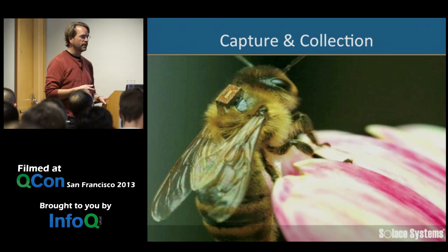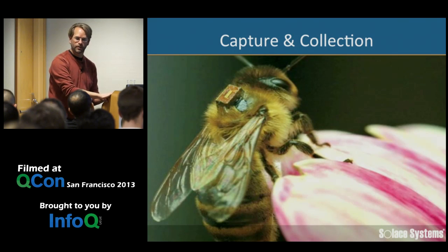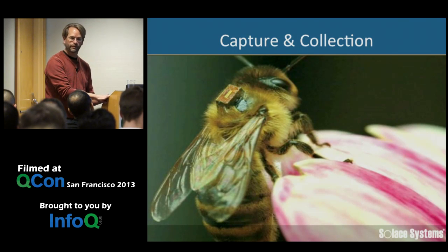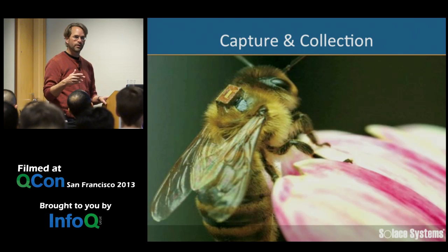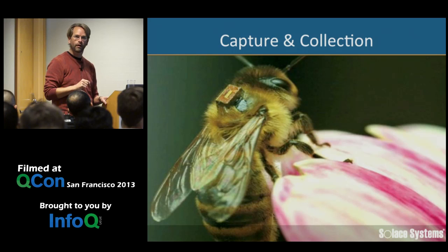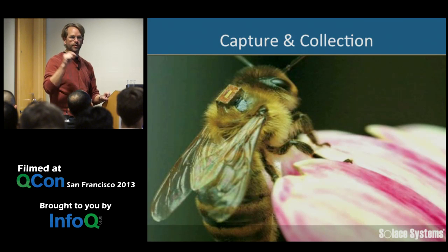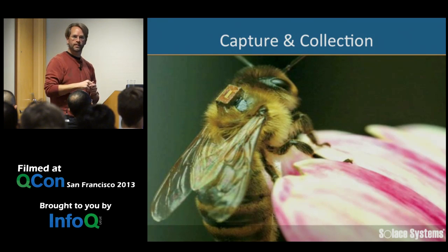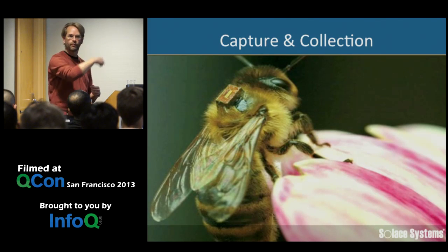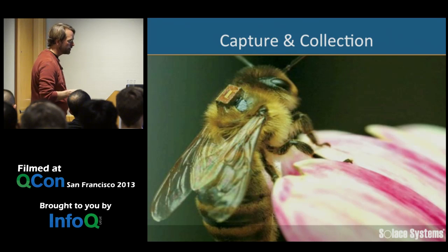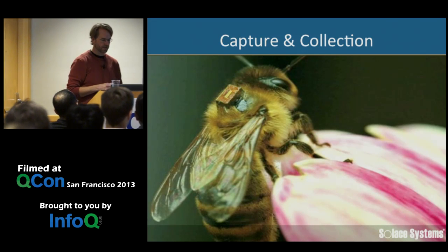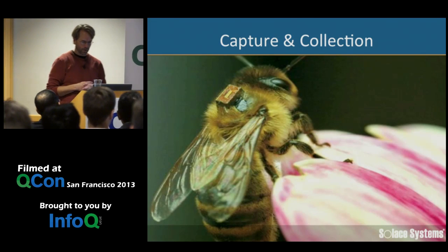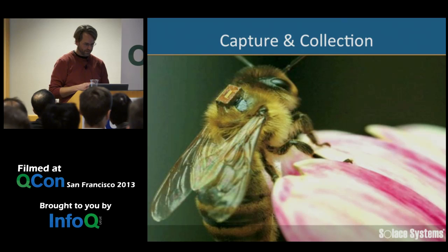This dream of smart dust — sensors you can just throw around everywhere — is probably not that far off. If you can put a chip on a bee and track it, you certainly can put a chip on every piece of mail, every package, every vehicle, and react to that in real time. We did a proof of concept in Japan doing the equivalent of FedEx delivery where you could tell in real time to get a package routed to wherever the recipient was.